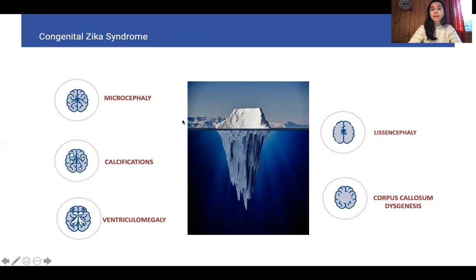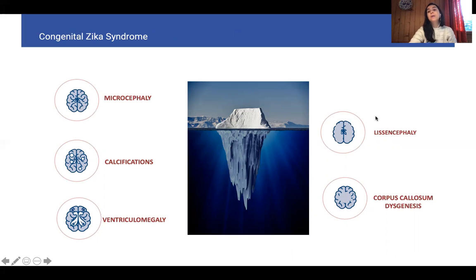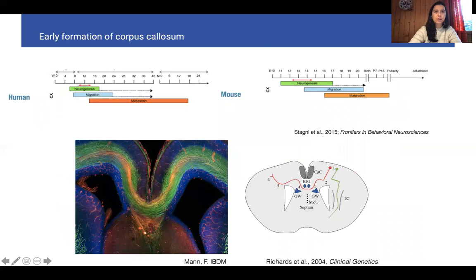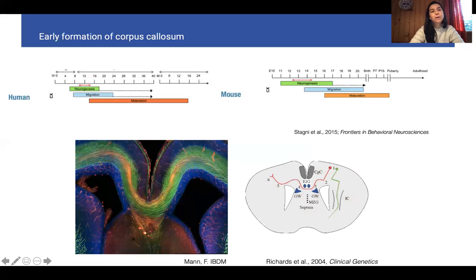We also know now that microcephaly is, in fact, just the tip of this iceberg. There are many other malformations related to the syndrome, such as calcifications, enlargement of the lateral ventricles called ventriculomegaly, lissencephaly, and corpus callosum dysgenesis. Today I will talk about what we have been learning about how Zika virus causes corpus callosum dysgenesis. The corpus callosum is a commissure made from the axons of callosal cells that cross the two hemispheres, allowing communication between them.